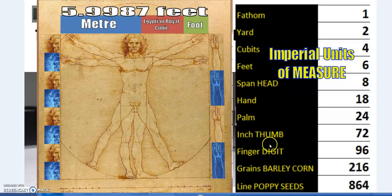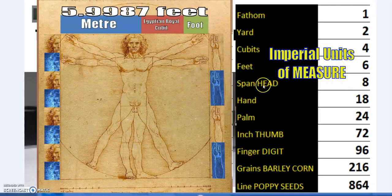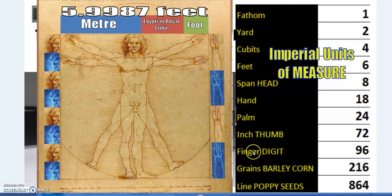Six feet equals four cubits — in the Greco-Roman root of the English system, one and a half feet is a cubit — so six feet is also four cubits, two yards, and one fathom. We also have other definitions such as a span. A span, if you stretch your fingers out from the tip of your thumb to the tip of your pinky, is a span, and that should be the same as the distance from your chin to the top of your head. Man is a measure of all things.